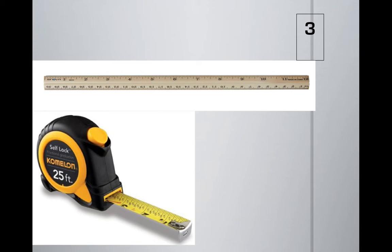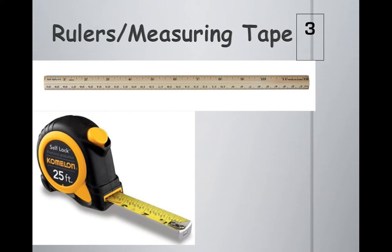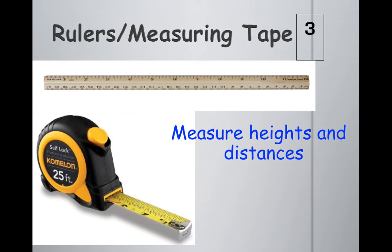The third item is probably very familiar to you - measuring devices for length or height. These are rulers or measuring tape, used to measure heights and distances.